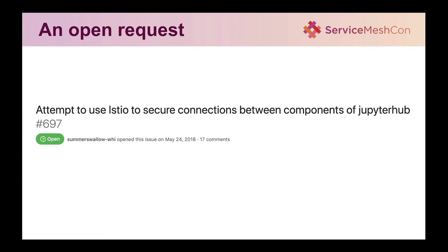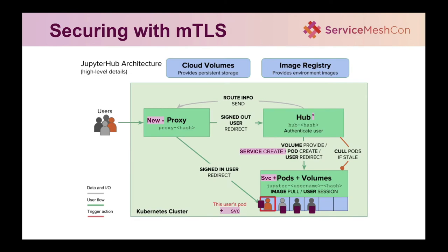Service mesh is used to understand the network of microservices and how they interact amongst themselves and how traffic flows between one service and another. When we got this requirement, the first thing we did was go out to the community and see what options we have. There was an open request on the JupyterHub Kubernetes community to support securing connections between different JupyterHub components using Istio — and that's exactly the kind of problem we had on our hands. I thought I was ready to enable Istio on the namespace and things should just magically work. But our life as engineers is not so easy.